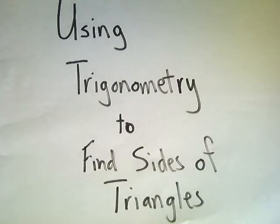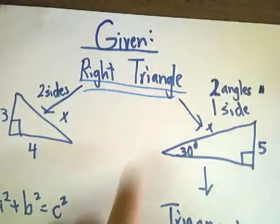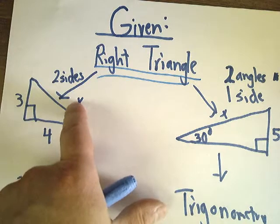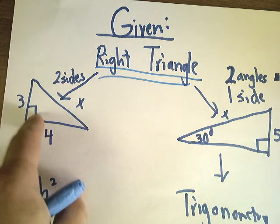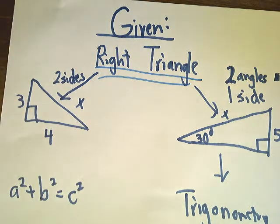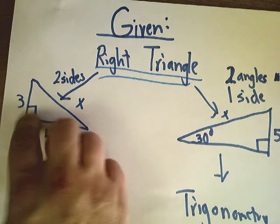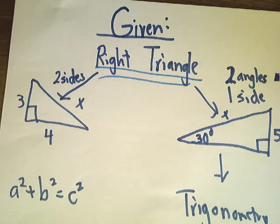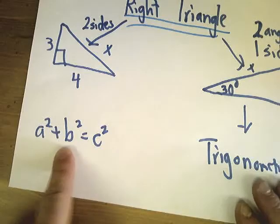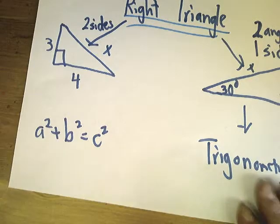In the Pythagorean Theorem, we're given a right triangle. We know what two sides are. We know it's a right triangle because it has this little square — or it says 90 degrees. If we have two sides, we just use a² + b² = c².